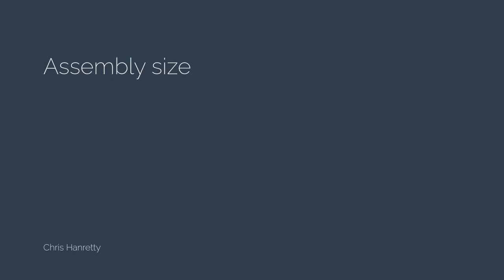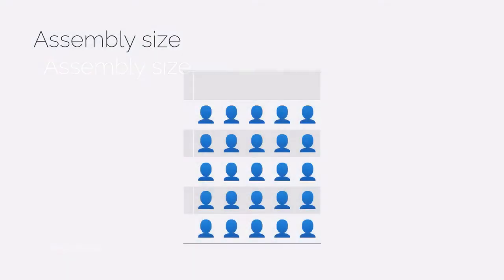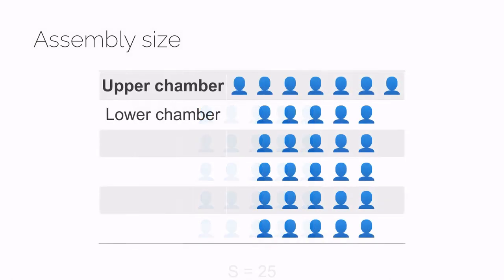Assembly size is one characteristic of a country's political institutions that's rarely mentioned. That's disappointing because assembly size influences the politics of a country in subtle ways. Assembly size is just the number of members of a legislature — in this example, 25. Where a legislature has two chambers, most references to assembly size are references to the size of the lower chamber.